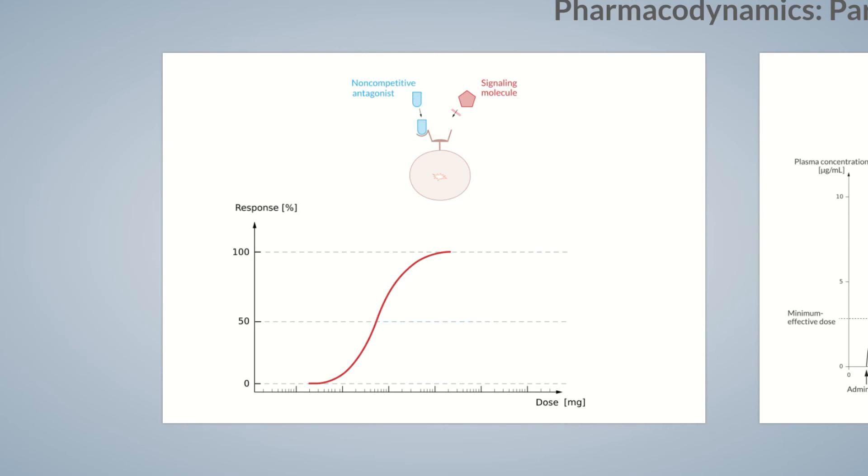In contrast, if a non-competitive antagonist is administered to the patient, then the maximum efficacy of the signaling molecule decreases. In such cases, antagonist binding doesn't block the receptor but diminishes the interaction between the signaling molecule and the receptor.